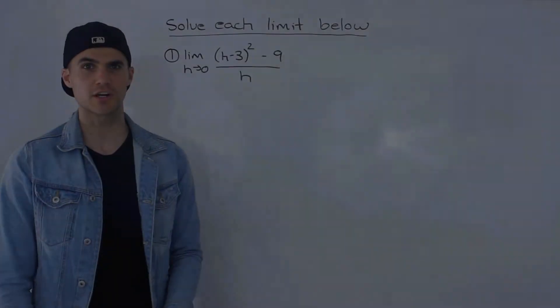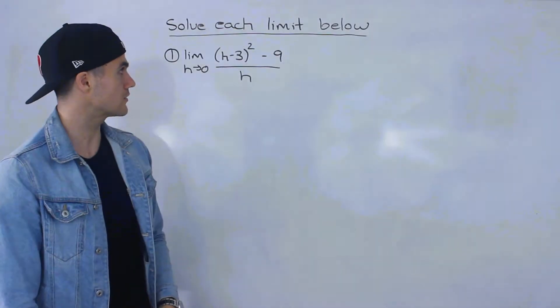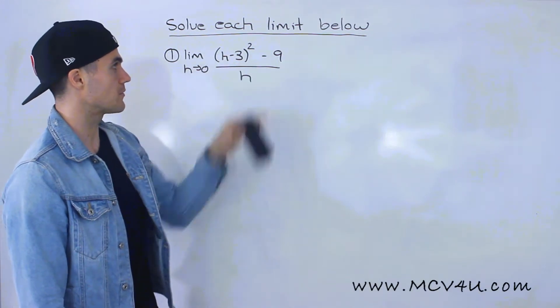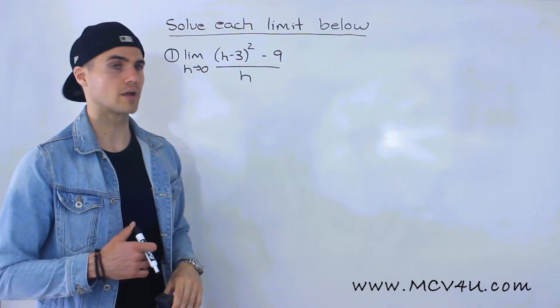What's going on everyone? Welcome back. Patrick here and moving on to another limit. So we got the limit as h approaches zero of h minus three to the power of two minus nine all over h.